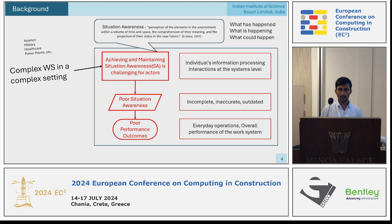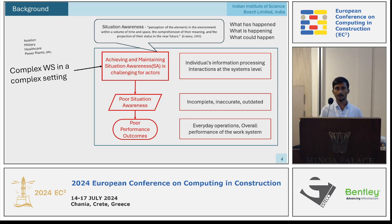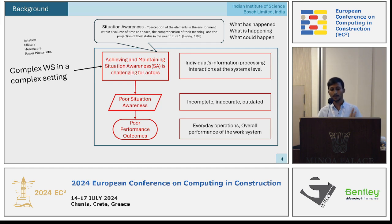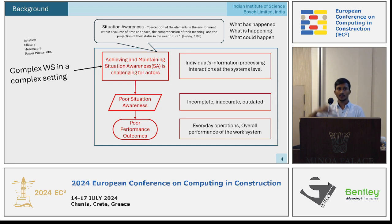At the work system level, there are two-level processes. One is happening at the individual level — cognitive processes happening in everyone's mind. At the system level, there are different interactions happening between all the actors and technologies. Poor situation awareness means incomplete, inaccurate, or outdated situation awareness, and this will be reflected in everyday operation and will be visible in the overall performance of the work system.